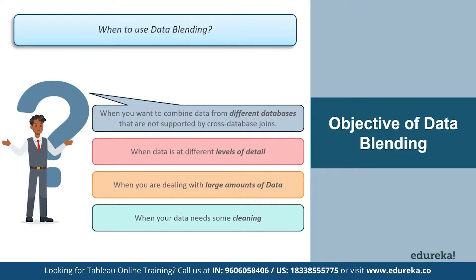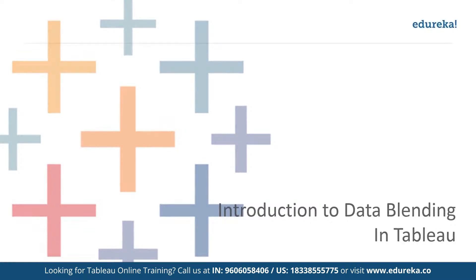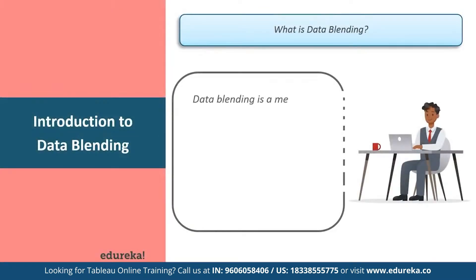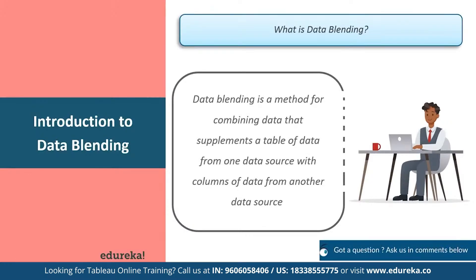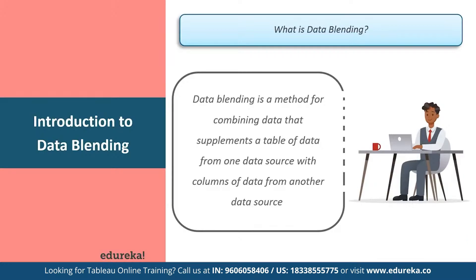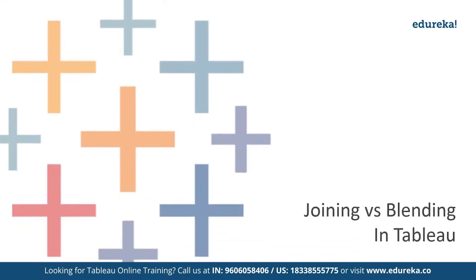Now that we know when to use data blending, let's find out what it actually means. Data blending is a method to combine data that supplements a table from one data source with data from another data source. For SQL users, it is basically an advanced version of a left join. Data blending simulates a traditional left join, and the main difference between the two is when the join is performed with respect to aggregation.